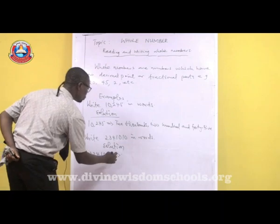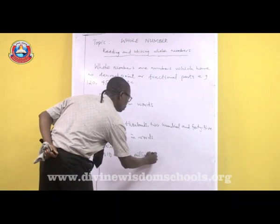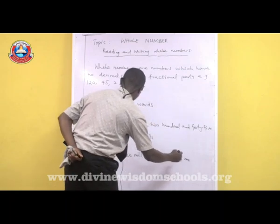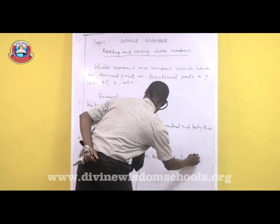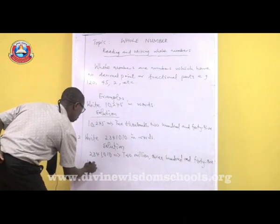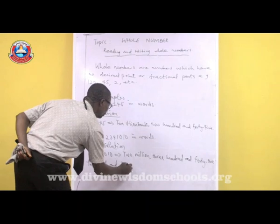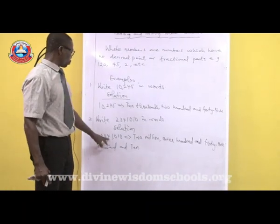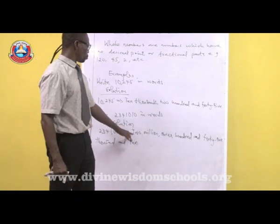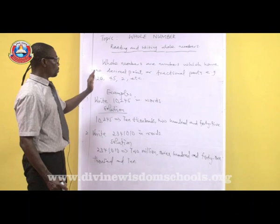This number is already in the millions. So 2,341,010 is written in words as two million, three hundred and forty-one thousand and ten. This is how you express numbers or values in words.